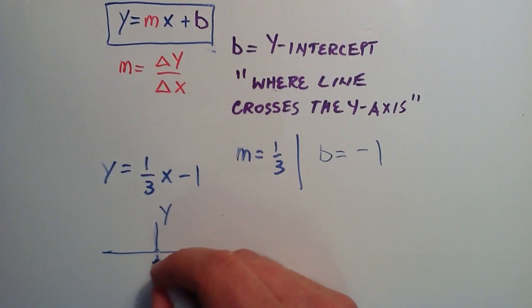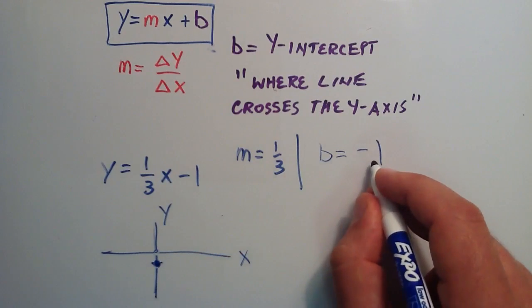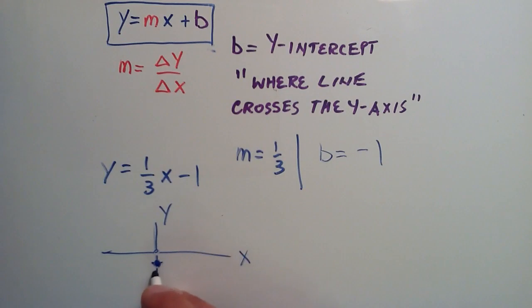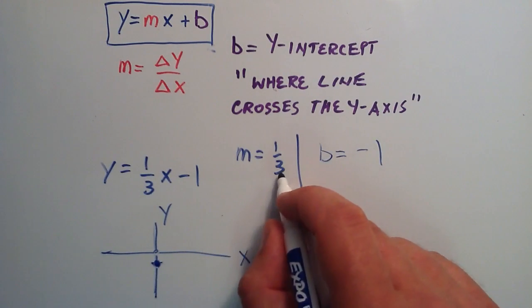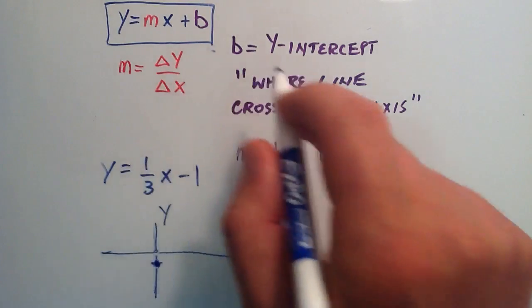This tells us that the line will cross at that point, negative one on the y-axis. And it tells us that it has a slope of one-third. So the slope, once again, is the change in y over the change in x.